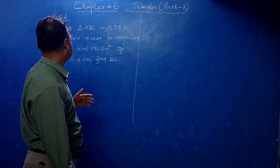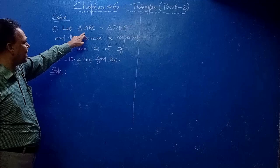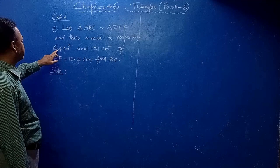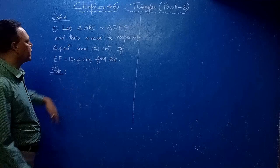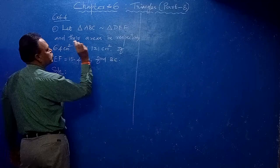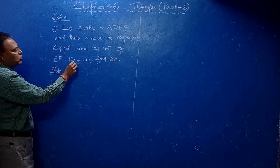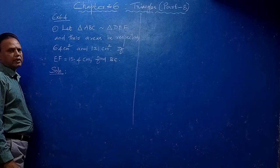Now using that result we can see the problems in Exercise 6.4. First problem: it is given that Triangle ABC is similar to Triangle DEF. Their areas are respectively 64 cm² and 121 cm². If EF equals 15.4 cm, find BC.